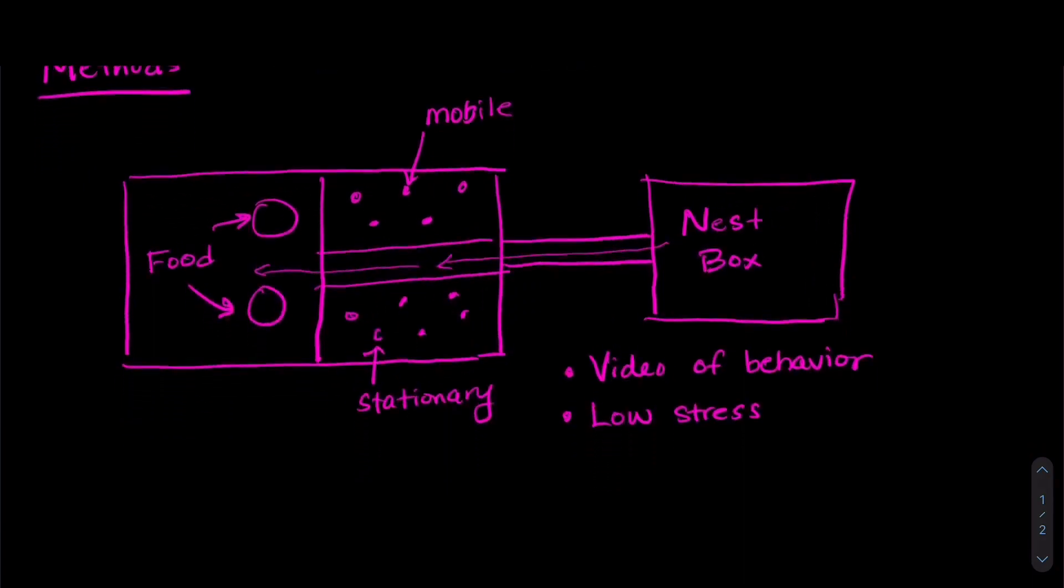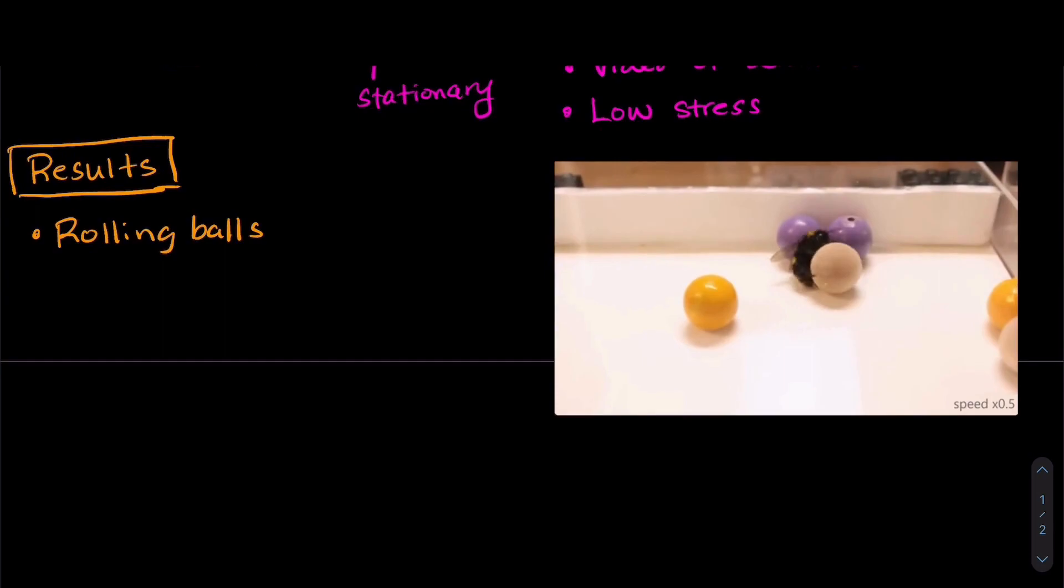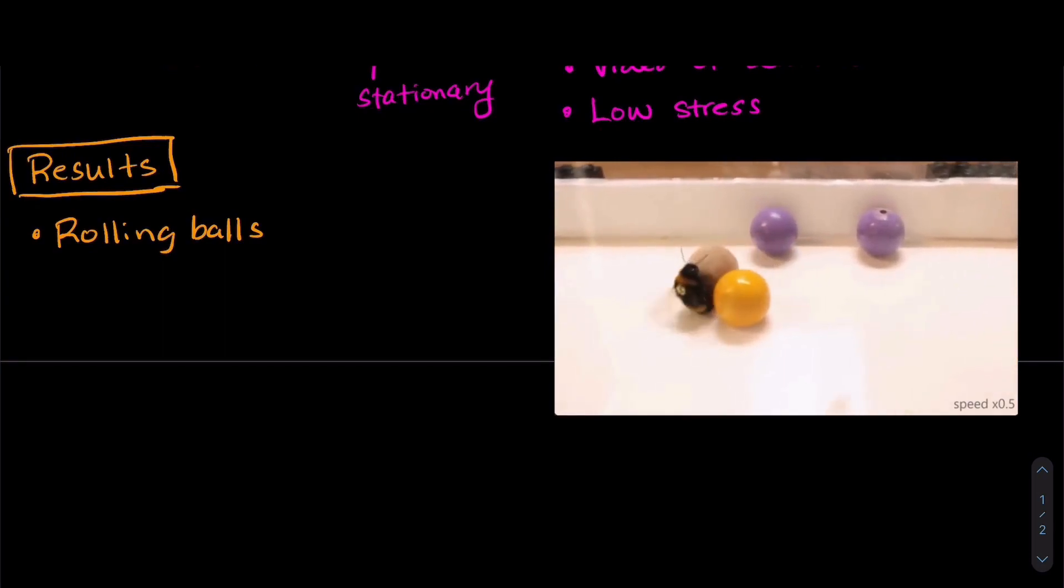So what did they find? Let's talk a little bit about the results. So first of all, they found that the bumblebees really liked rolling the balls. And in fact, one of their bees actually rolled balls 117 times over those 18 days.